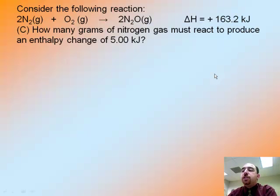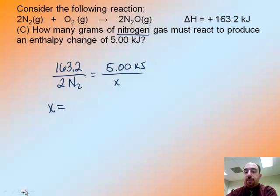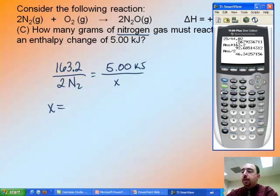Now part C. How many grams of nitrogen gas must react to produce an enthalpy change of 5 kilojoules? Process is the same here. You're setting up a ratio. So 163.2 over, now this time I'm talking about nitrogen. So I do the coefficient of nitrogen. It says that my enthalpy change is 5 kilojoules. So I'm only going to put in 5 here as my heat. And I'm going to solve for moles. And the reason I'm going to solve for moles is the question does ask for grams, and I know that if I have moles, I can find grams. So cross multiply.